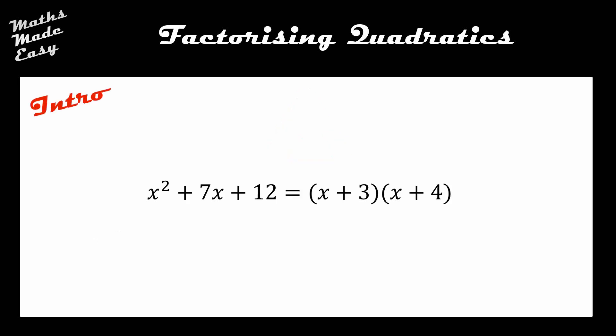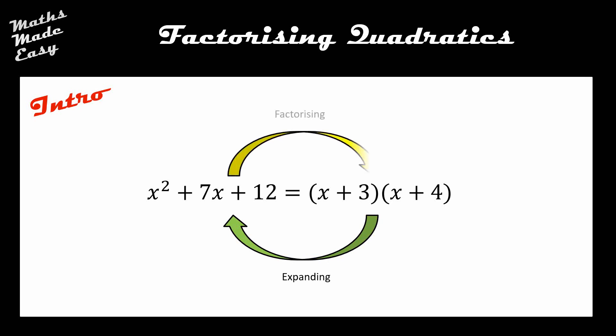On the screen is a quadratic expression given in two different ways. On the left-hand side is what we call the expanded version, and on the right-hand side with the brackets is the factorized version. The easiest direction is going from right to left — expanding the brackets. Going the other way, putting those brackets in, is what we're focusing on today: factorizing.